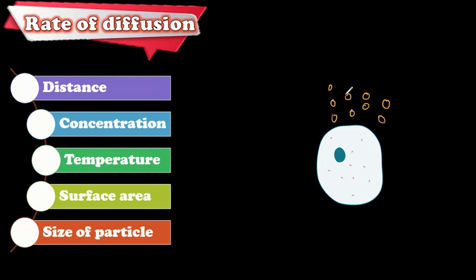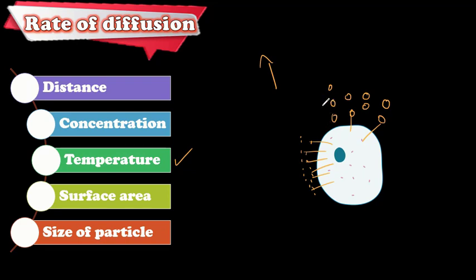The fourth factor is particle size. As we studied in the kinetic theory of matter, heavier and bigger particles move slower, while lighter particles move faster. Also, the membrane won't allow big particles to pass easily. Small particles diffuse faster and more easily. Finally, temperature: high temperature means particles vibrate and move faster, leading to a higher rate of diffusion. Low temperature leads to a lower rate of diffusion. These are all the factors that affect the rate of diffusion. In the next video we will look at osmosis.